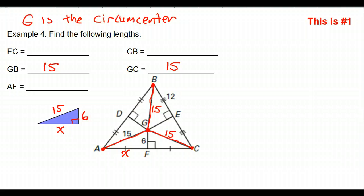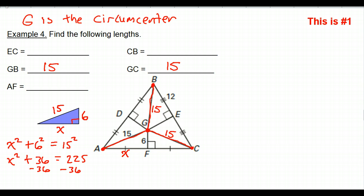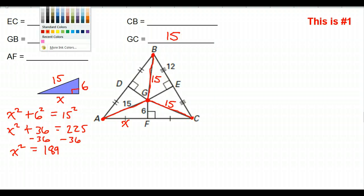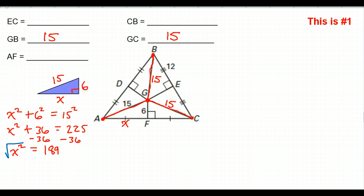So that's going to be X squared plus 36 equals 225. Then I'm just going to subtract 36 from both sides. That's going to give me X squared equals 189. If I just take the square root of both sides, my TI-30 XS multi-view is going to give me 3 radical 21. So that is AF — 3 square root of 21.